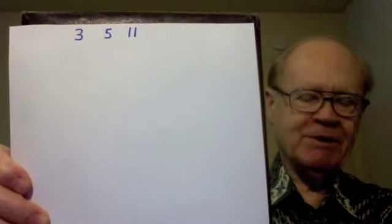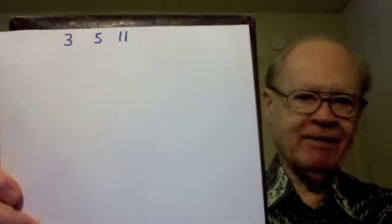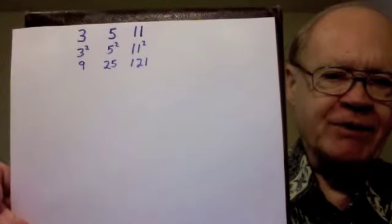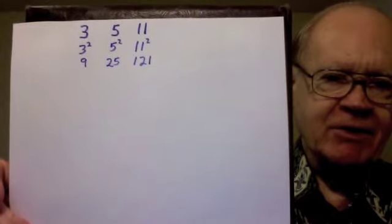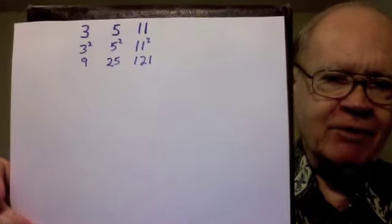Here's my discovery. I start with three numbers. In this example, I will start with 3, 5, and 11. I square each of them, that means I multiply each by itself, and I get 9, 25, and 121.